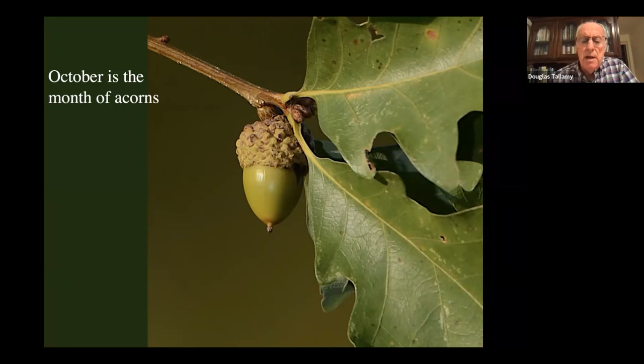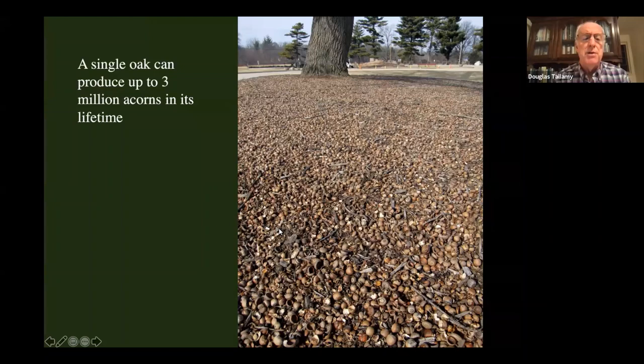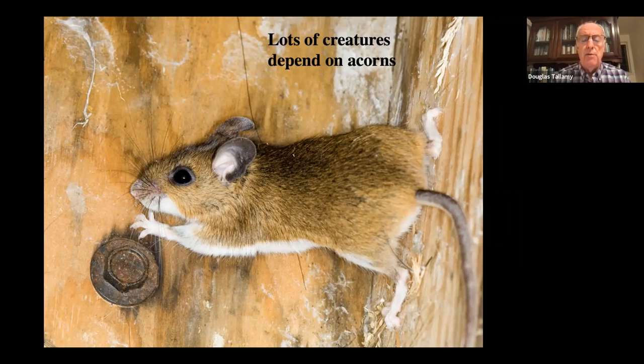Oaks make a lot of acorns — a single oak can produce three million in its lifetime. Acorns are large, nutritious nuts providing a lot of energy for a lot of creatures. A lot of rodents depend on acorns, and mammals in general — black bears really eat a lot of acorns.